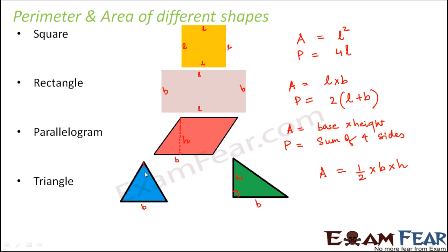And in case of this triangle, if this is the base, then this is the height, the perpendicular drawn from the opposite vertex. So this is how we find out the area. And what about the perimeter? In case of a triangle, perimeter would be equal to sum of the three sides.